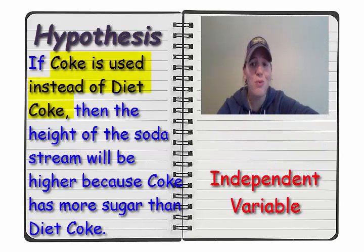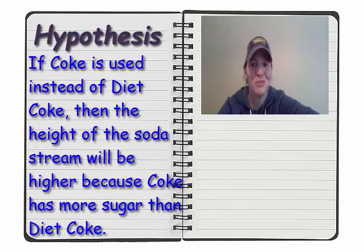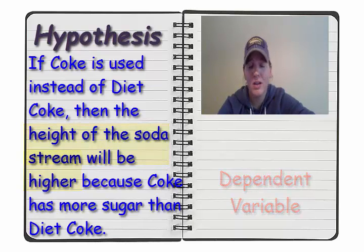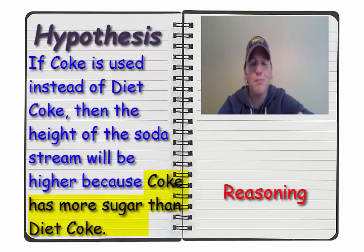Notice how I followed the proper format. I have if, then my independent variable, that Coke is used instead of Diet Coke. Remember we're changing the type of soda? I have then my dependent variable. What's going to happen to it? I think the height of the soda stream will be higher, and then a because statement. My reason, why I picked what I picked.